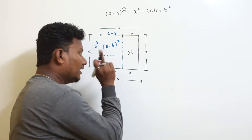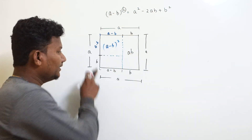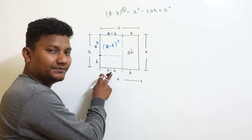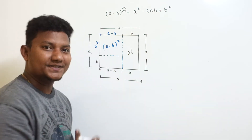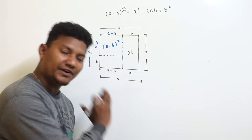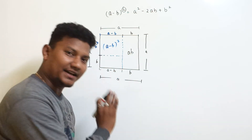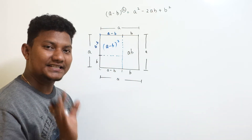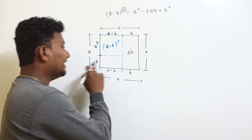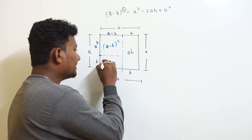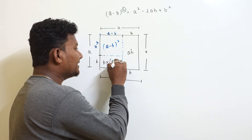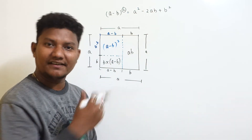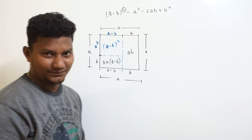Focus on the third box. Here the sides are 'b' and 'a minus b'. Since the adjacent sides are different, it is also a rectangle. The area of a rectangle is length into breadth, so the area of the third box is b into (a minus b), which we can also write as (a minus b) into b.